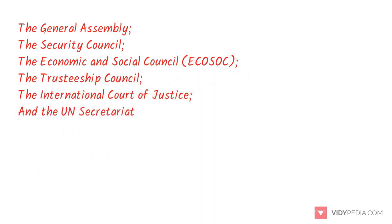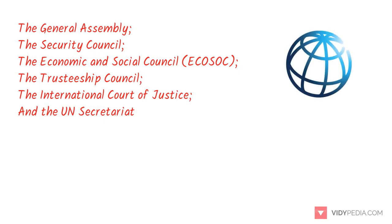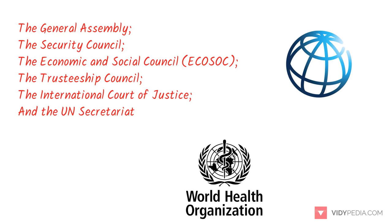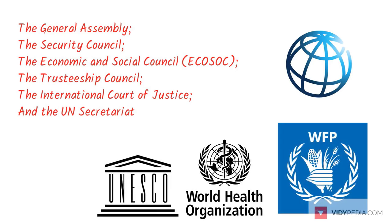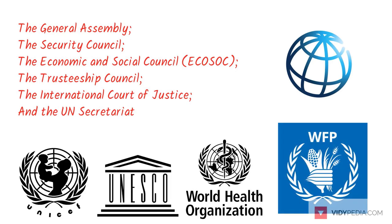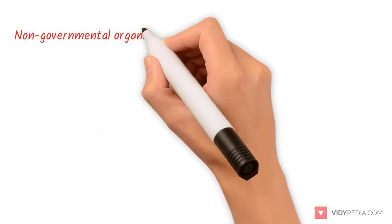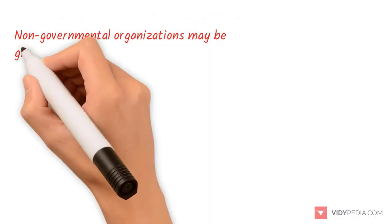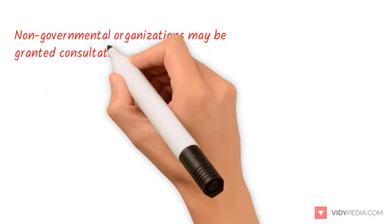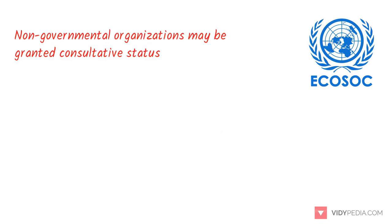The UN system includes a multitude of specialized agencies, funds and programs such as the World Bank Group, the World Health Organization, the World Food Program, UNESCO, and UNICEF. Additionally, non-governmental organizations may be granted consultative status with ECOSOC and other agencies to participate in the UN's work.